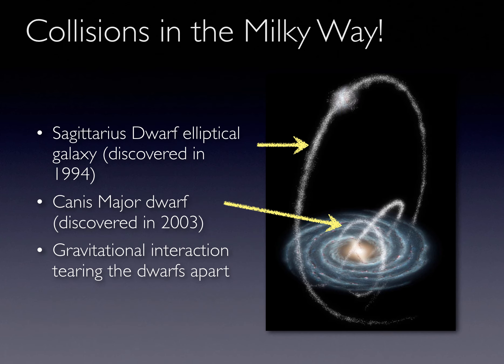Meanwhile, galaxies in the large dark matter clumps begin to merge together. We observe galaxies merging today, but mergers would have occurred more frequently in the past. The 13 small galaxies that orbit the Milky Way will eventually merge with it. In fact, the Canis Major Dwarf Galaxy and the Sagittarius Dwarf Galaxy are both currently merging with the Milky Way.